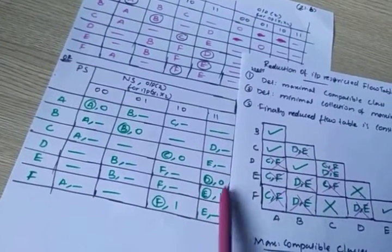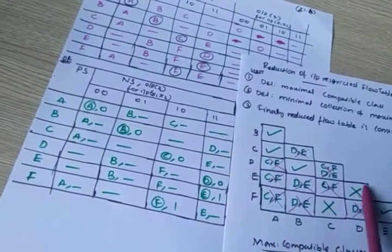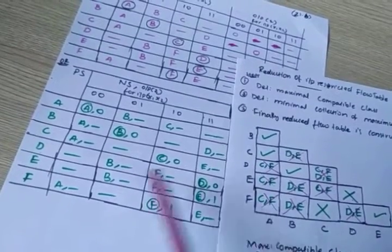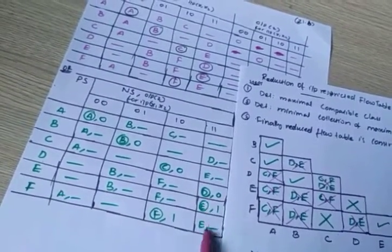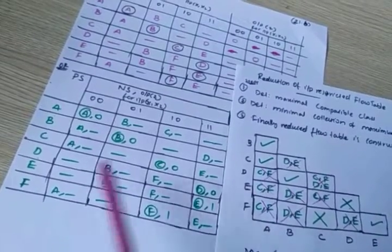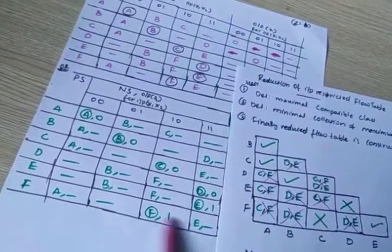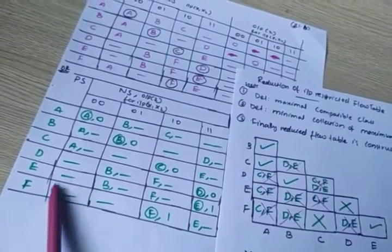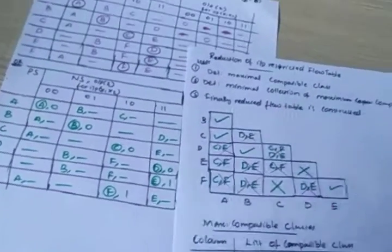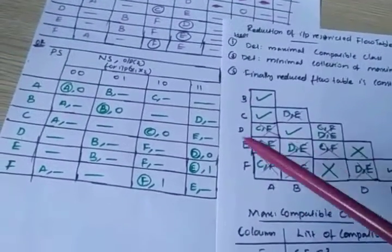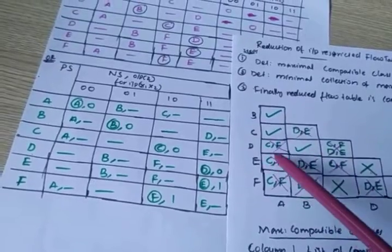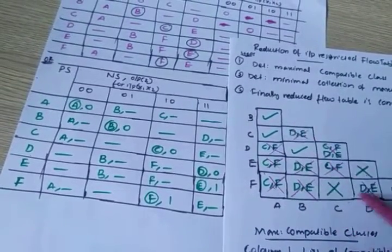Consider D-E: there is also an output mismatch — 0 and 1 — so you put a complete cross sign. Consider D-F: it is completely matched, so you put a tick mark here. This completes the first pass.